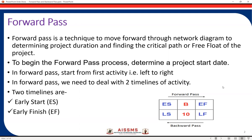ES is early start, EF is early finish, LS is late start, and LF is late finish. We are going to find out the LS and LF values during the backward pass. The first two values are calculated during the forward pass, and the last two values during the backward pass. The forward pass moves from left to right, whereas the backward pass moves from right to left.